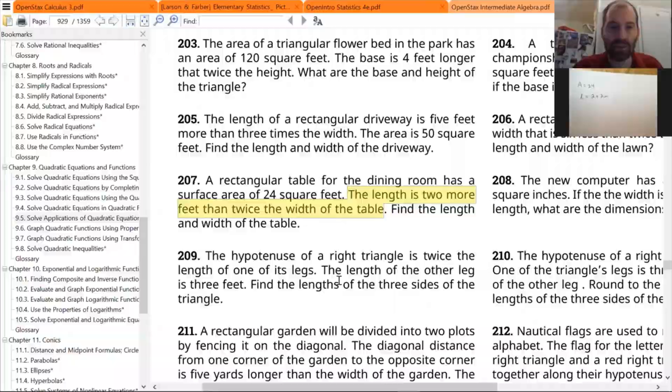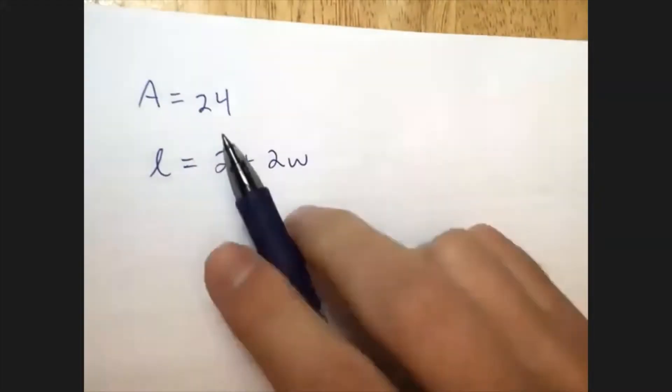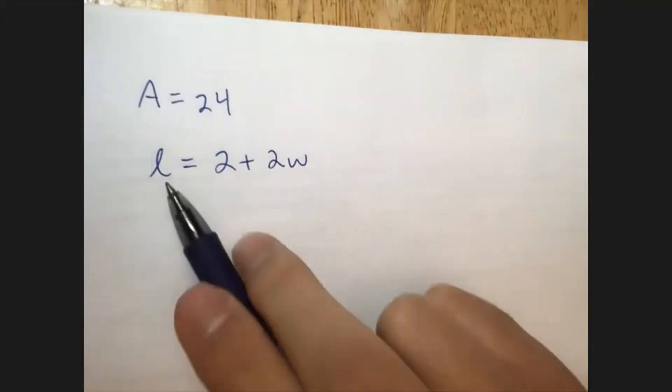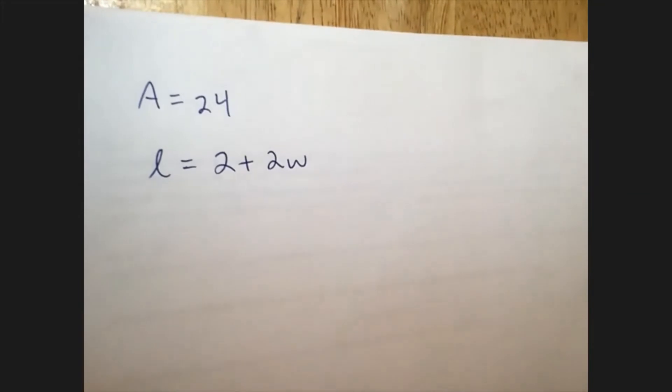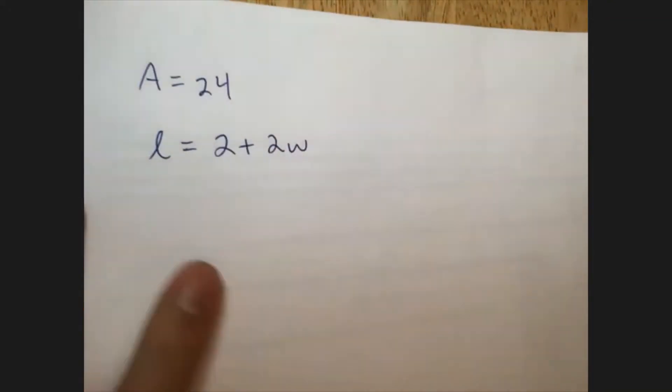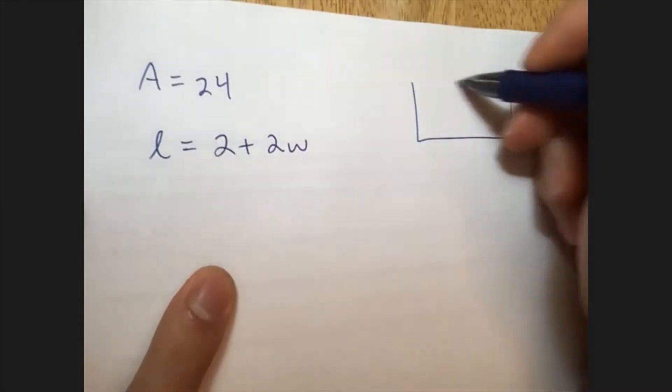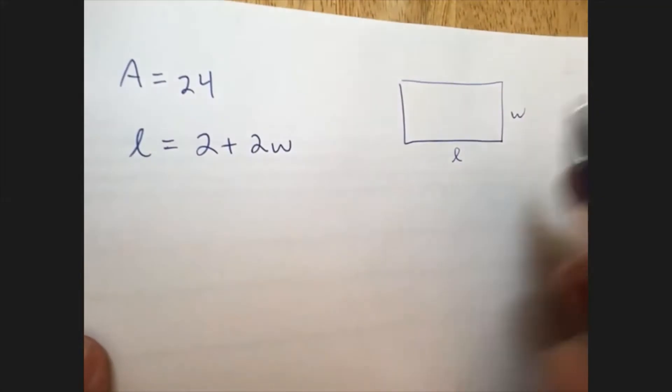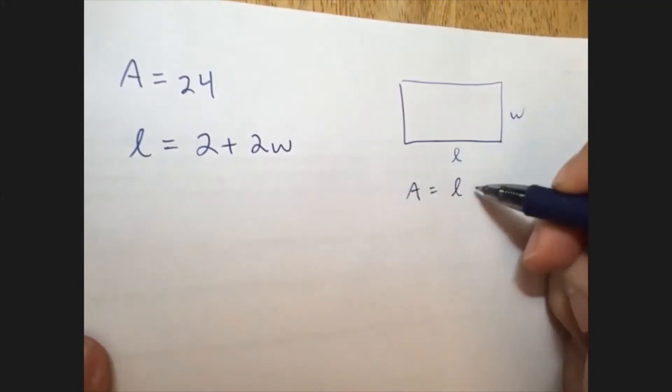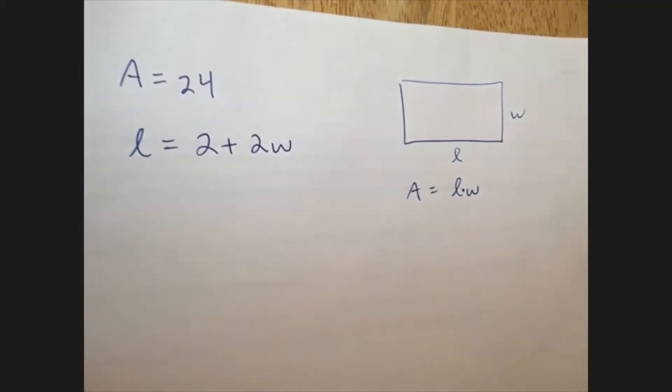Okay, so let's go down to the sheet. I've written some of this stuff down. The area is 24. The length is two more than twice the width. So that's what we have. Now, area, how does that relate to length and width? Well, if you have a rectangle, the area is equal to length times width. So we multiply these.